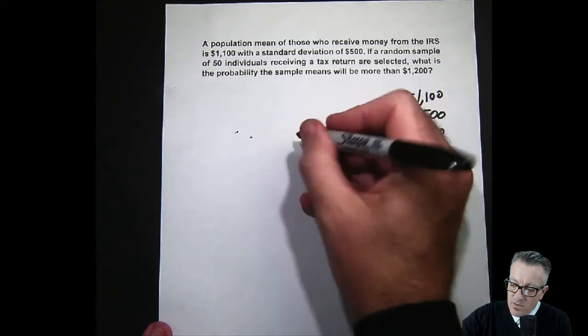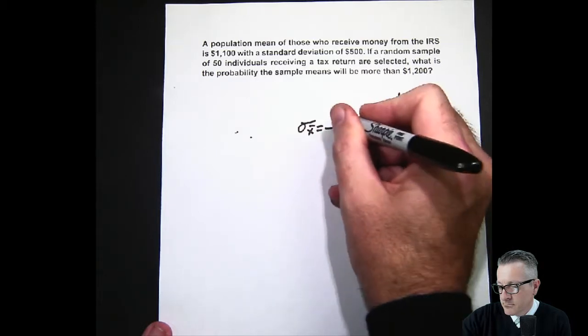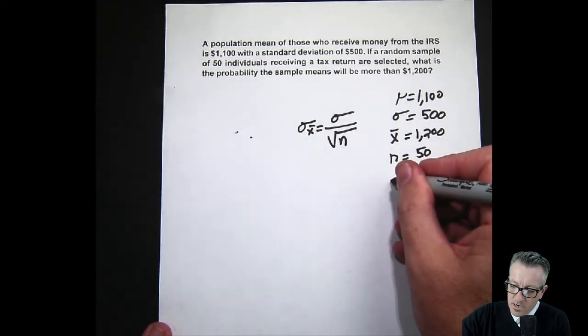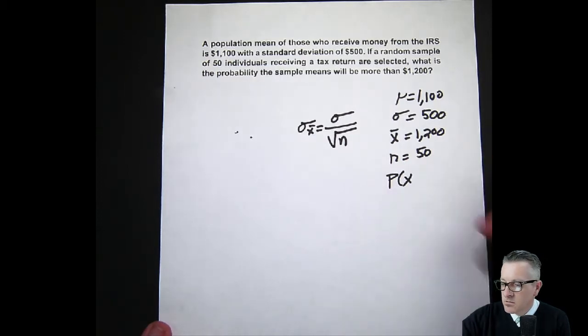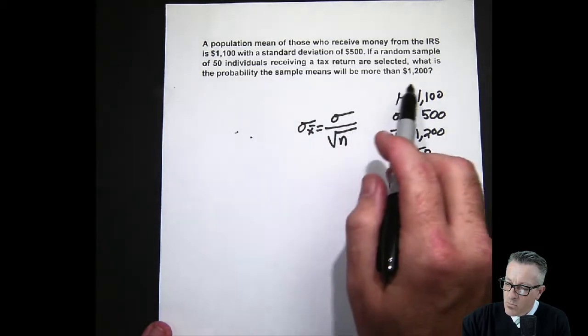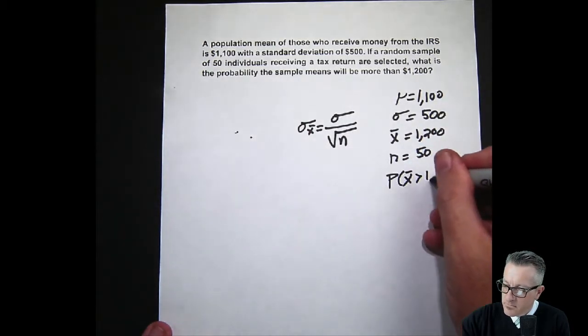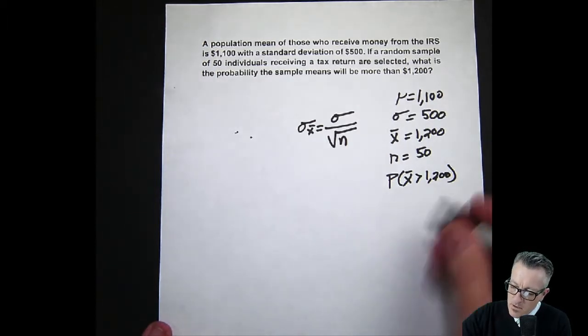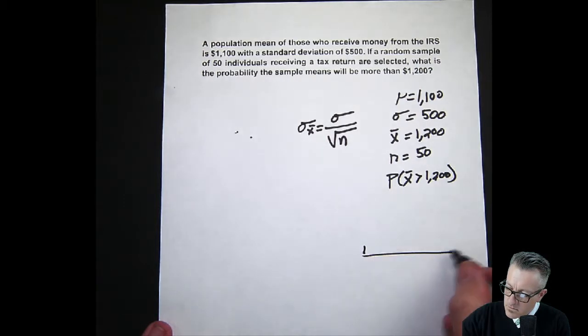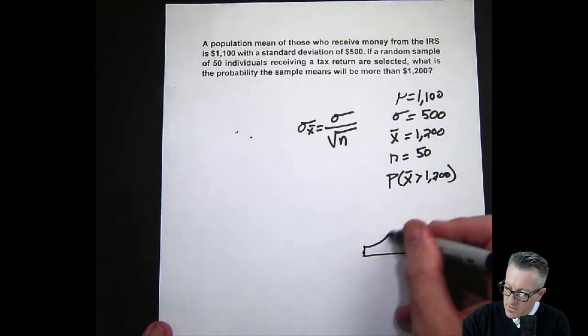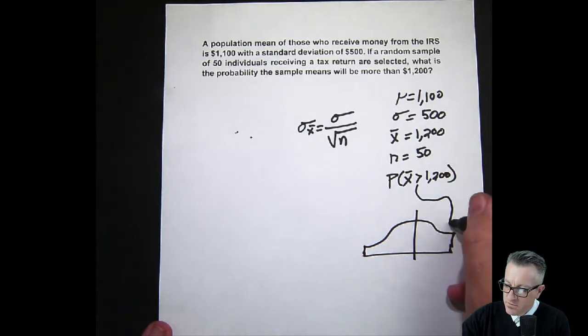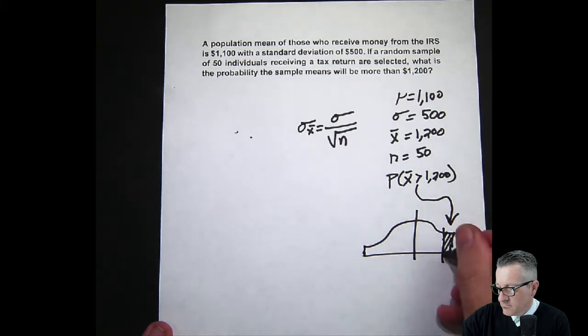Let's write down our probability statement of what we're actually trying to solve. We're looking for P(X̄ > 1200). Make sure your inequality is pointing the correct direction - it's very important because it's going to help us make sure we're right when we do the calculation. It points towards our area of interest, which is right here in this tail on the right.